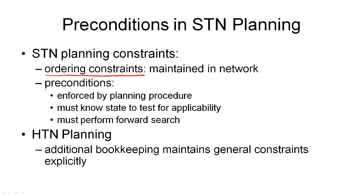The other type of constraints we've seen are the preconditions. Preconditions are constraints on the state before a method or an action is applied. What we've done in STN planning is that we've written it into our planning procedure that preconditions must hold. So preconditions were enforced by the procedure, and to be able to enforce preconditions, the planning procedure had to rely on knowledge of the state before a method or an action was applied. So we must know what exactly that state is to be able to test for applicability, and that means we must perform forward search.